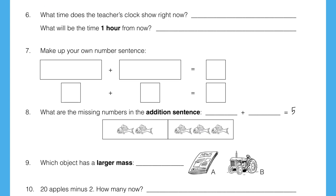Question 6. What time does the teacher's clock show right now? Look up and have a look at the clock in the room. What will be the time one hour from now? Write that time down as well.